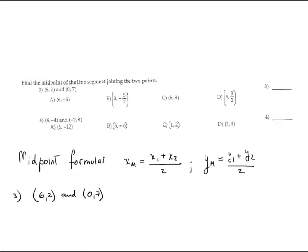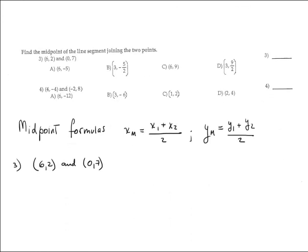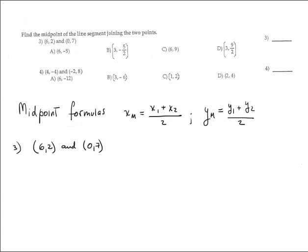Number 3 is: find the midpoint of the line segment joining the 2 points. It's giving these points — this is X1, Y1, and this is X2, Y2.